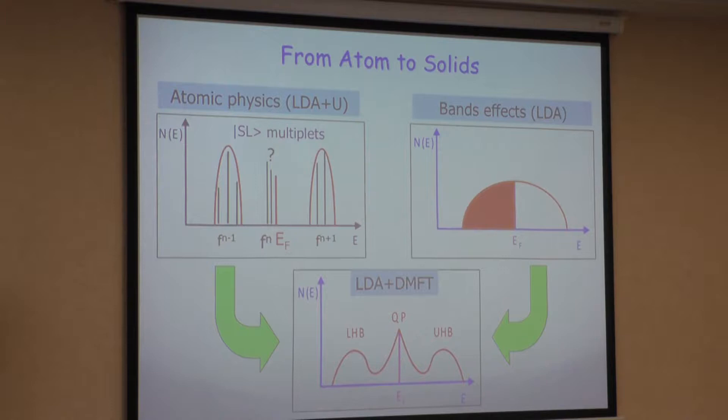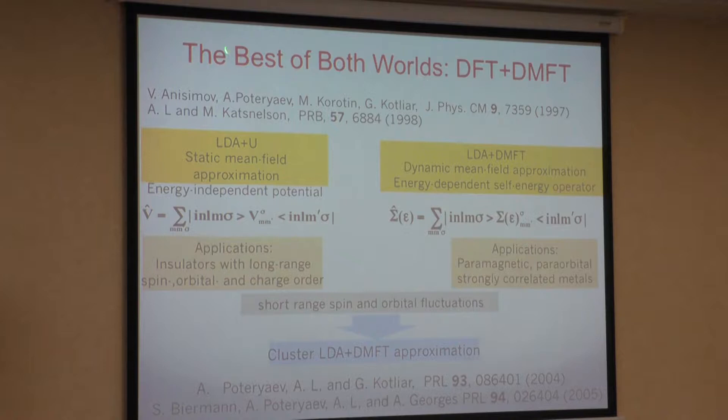For correlated materials, you have this feature of a three-peak structure: a coherent quasi-particle, but also atomic-like multiplets which can form lower Hubbard and upper Hubbard bands. This is the Mickey Mouse picture of what we want to do — we want the best of both worlds.